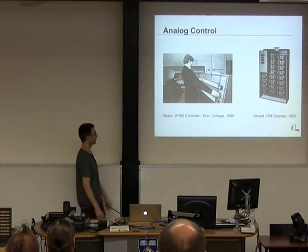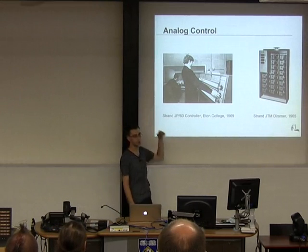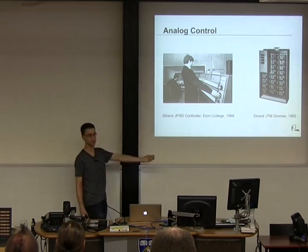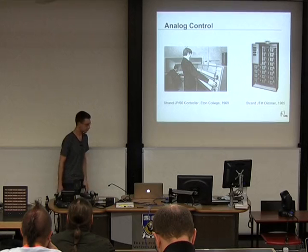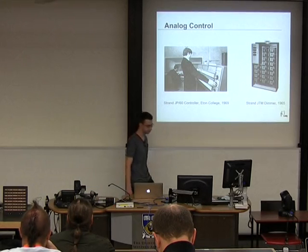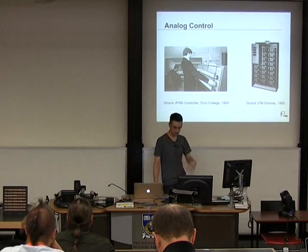The problem with this system is that it's all analog control. Typically the control signal is 0 to 10 volts, so you have massive, thick cables for even a relatively small number of channels, running from the back of the theater down to the front. Some of the very earliest desks were actually live-voltage control, with all the problems you can imagine switching very high voltages. These were the analog control desks.